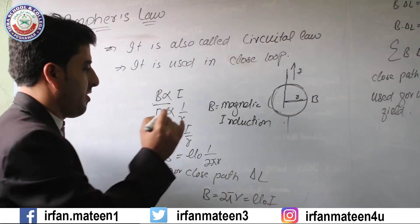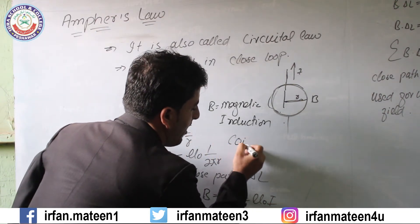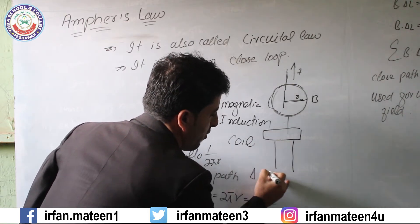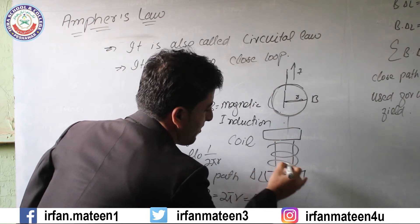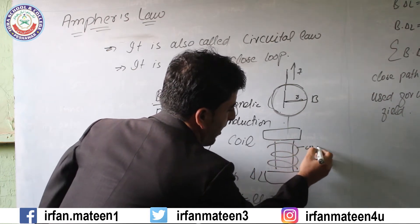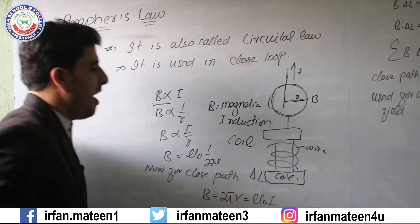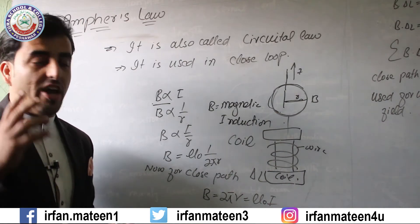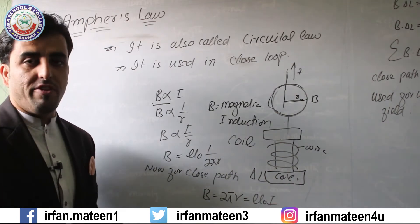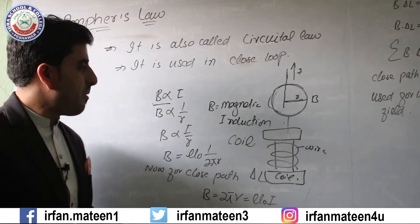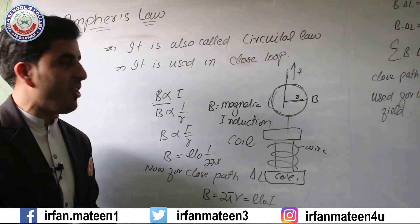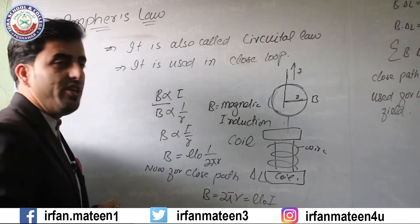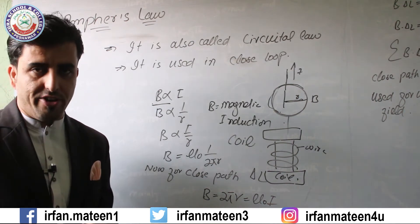From the diagram we can see that the magnetic field is already moving inside a circle from the current-carrying conductor, where the coil is already made. These are the circuit wires and these are the coil. Magnetic induction is directly proportional to the current — when we increase the current, the magnetic induction is also increased.